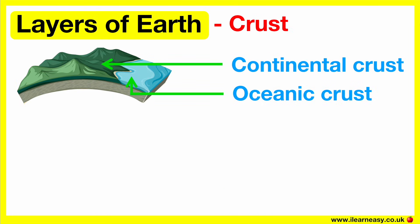The crust. There are two types of crusts: continental and oceanic. The crust is the thin outer layer of the Earth. The crust is about 15 to 25 kilometers thick. The continental crust under continents is about 25 miles thick. The crust is essentially the solid rock layer that we live on. It consists of rocks, soil, and everything else we can see on the Earth's surface.